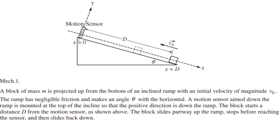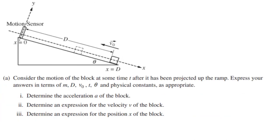We have a block of mass M projected up from the bottom of an inclined ramp with an initial velocity of V₀. The ramp has an angle theta with the horizontal, and the block starts at a distance D from the motion sensor — you can see they put the motion sensor at x equals zero, so it's starting at D. The block slides partway up the ramp, stops before reaching the top, and then slides right back down.